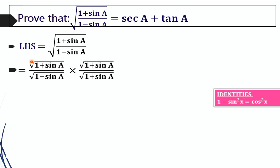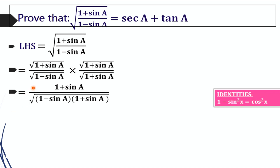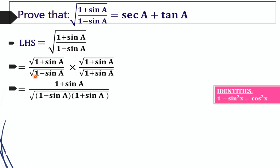We are multiplying in order to make the term square-root free. On multiplying, we will get square root of (1 plus sin A) into (1 plus sin A), which gives (1 plus sin A) in the numerator.